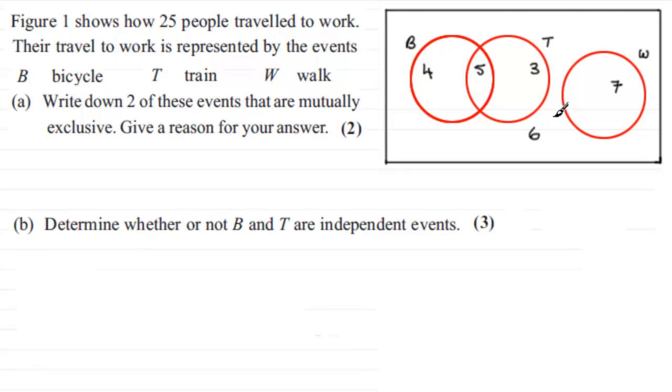So we've got this figure here, it says figure one, it shows how 25 people travel to work. The travel to work is represented by the events B for bicycle, T for train, and W for walking.